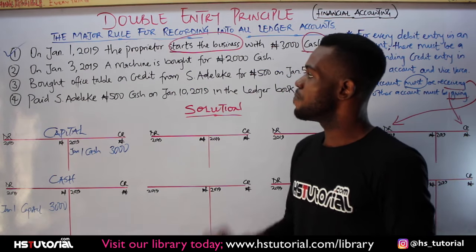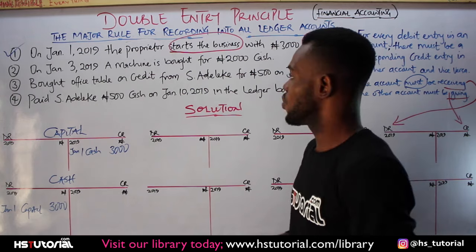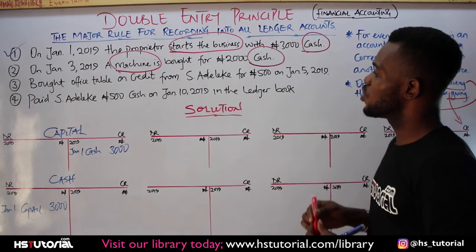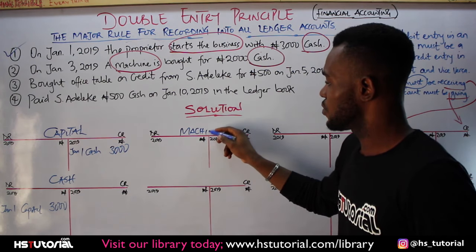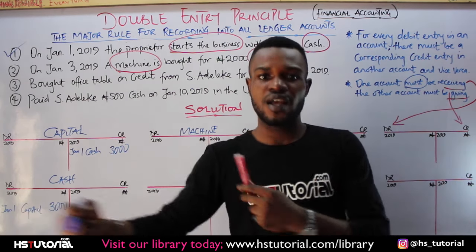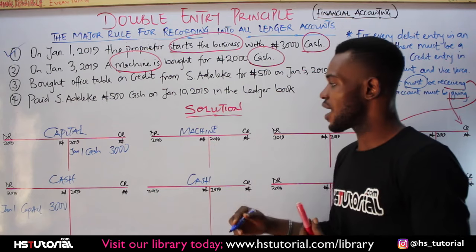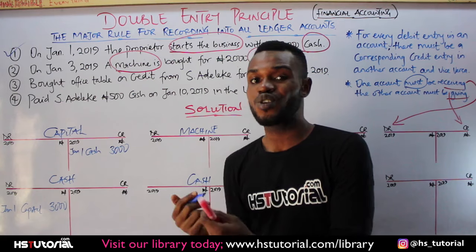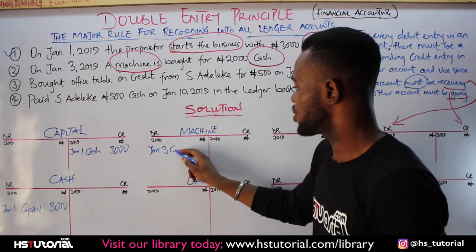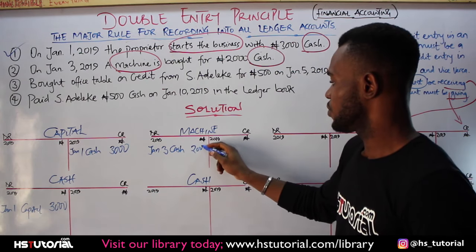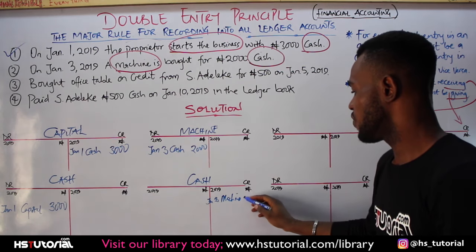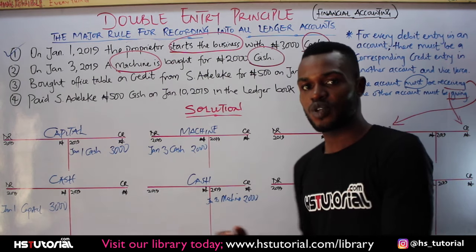For question number two: on January 3, 2019, a machine is bought for 2,000 Naira cash. We will create a machine account and a cash account. The next step is to identify which account is giving and which is receiving. Machine is coming in, so the machine account is receiving and will be debited. Under the machine account, you put the date and write 'cash' with the value 2,000. Under the cash account, you put the date and write 'machine' with the value 2,000. One account is receiving, the other account is giving out.